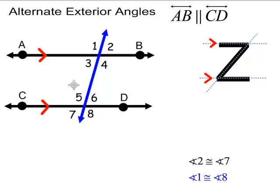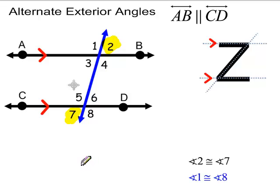For alternate exterior angles: if angles 3 and 6 are congruent, and since angles 3 and 2 are vertical angles, those are congruent to each other, and angles 6 and 7 are congruent to each other. By the transitive property, if 3 and 6 are congruent and those are vertical angles, then angles 2 and 7 have to be congruent — those are alternate exterior angles. Likewise, angles 1 and 8 are congruent.